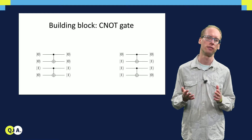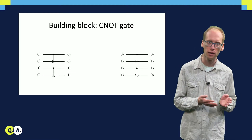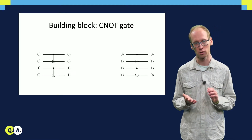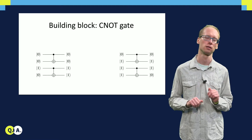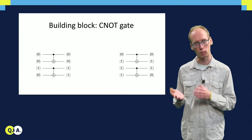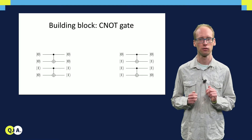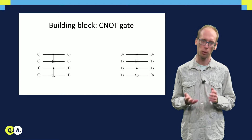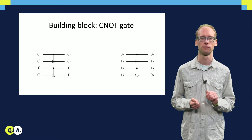That is, if the first bit is zero, the second bit value remains untouched, as can be seen on the top two circuits. If the first bit is 1, the second bit value gets flipped, as can be seen on the bottom two circuits.